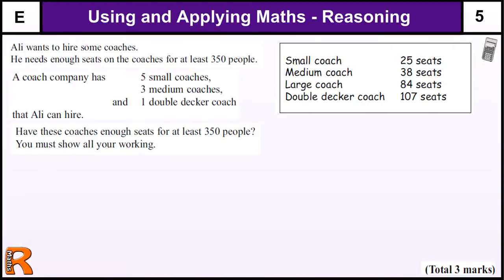You have a question on using and applying maths and reasoning, grade E GCSE level 5 national curriculum. We have some coaches, we're told how many seats each coach has, and a coach company has that many coaches.